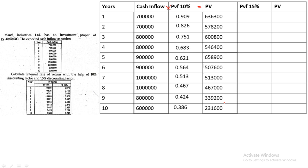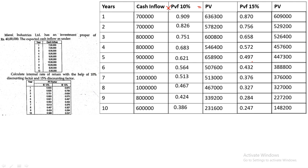So 7 lakh × 0.909 gives 6,36,300; 7 lakh × 0.826 gives 5,78,200, and so on. Step 1: note down all cash inflows; step 2: note down PV factors; step 3: multiply to get present value at 10%. Now the same thing we repeat for the PV factor at 15%. We note down the rates: 0.870, 0.756, 0.658, 0.572, and so on. Then multiply cash inflow by the PVF at 15% — 7 lakh × 0.870, 7 lakh × 0.756, and so on — to get the present values at 15%.